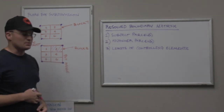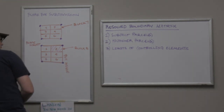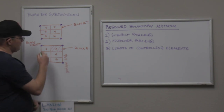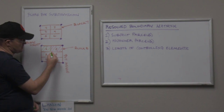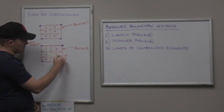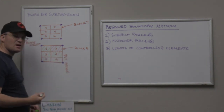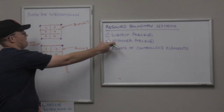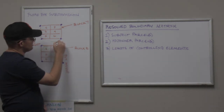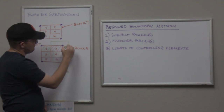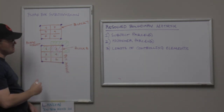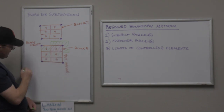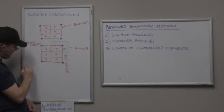Then we have our adjoining parcels — let's mark those in a different color. Lot 1 is an adjoiner; Lot 3 is an adjoiner because we touch kitty-corner; Lot 4 is an adjoiner. Lots 5 and 6 are not our adjoiners, so they are not in this layer. You could also reasonably say at least a portion — at least half — of the adjoining right-of-way in these two streets is also in layer two of the resolved boundary matrix.